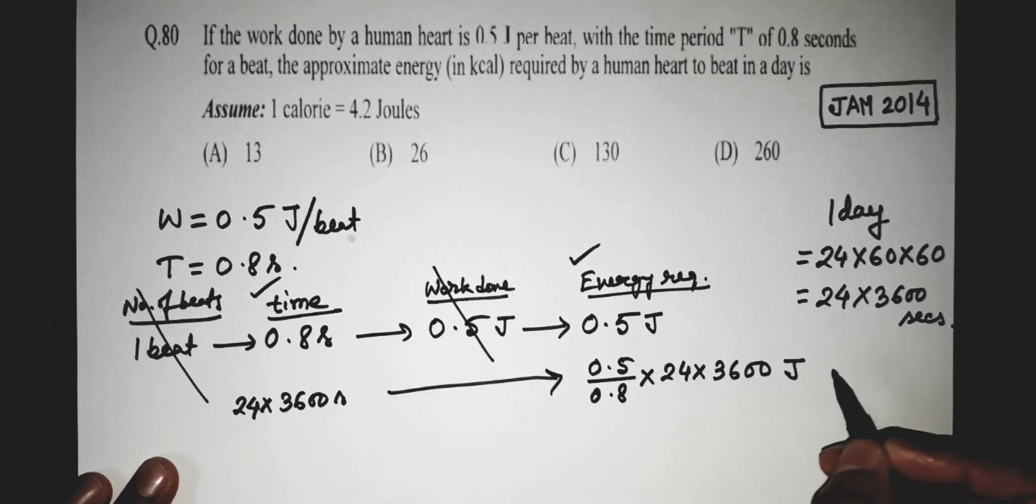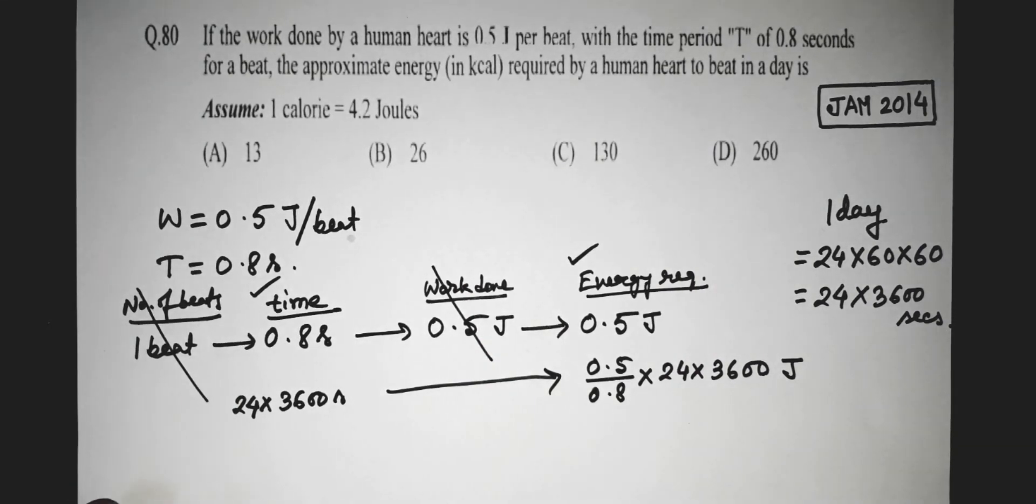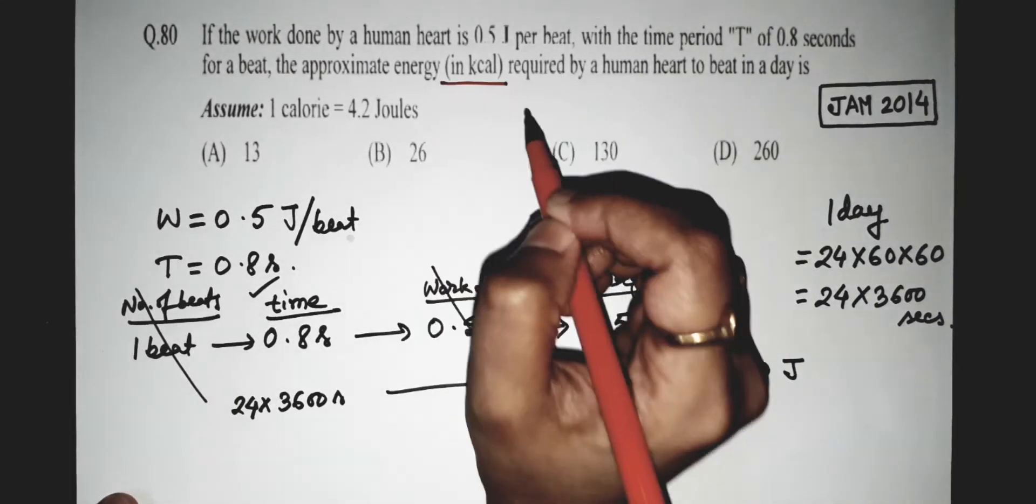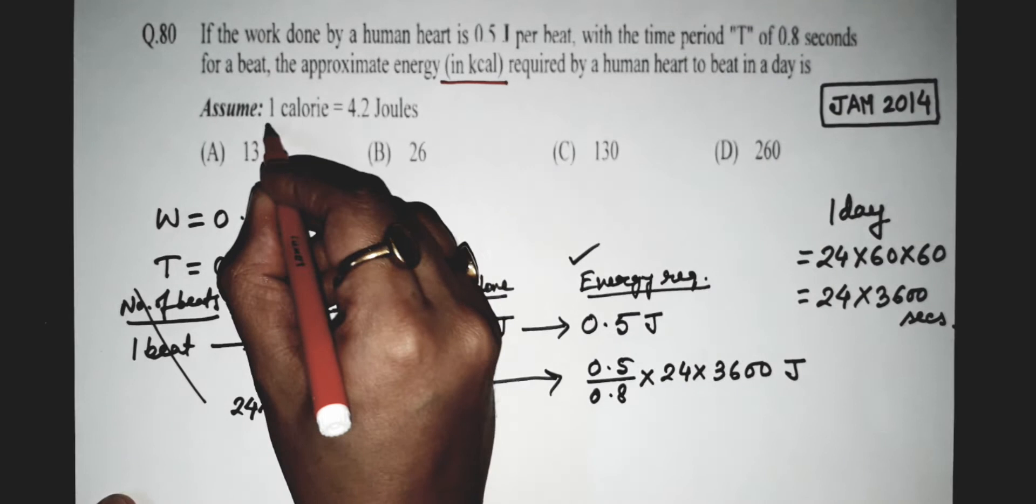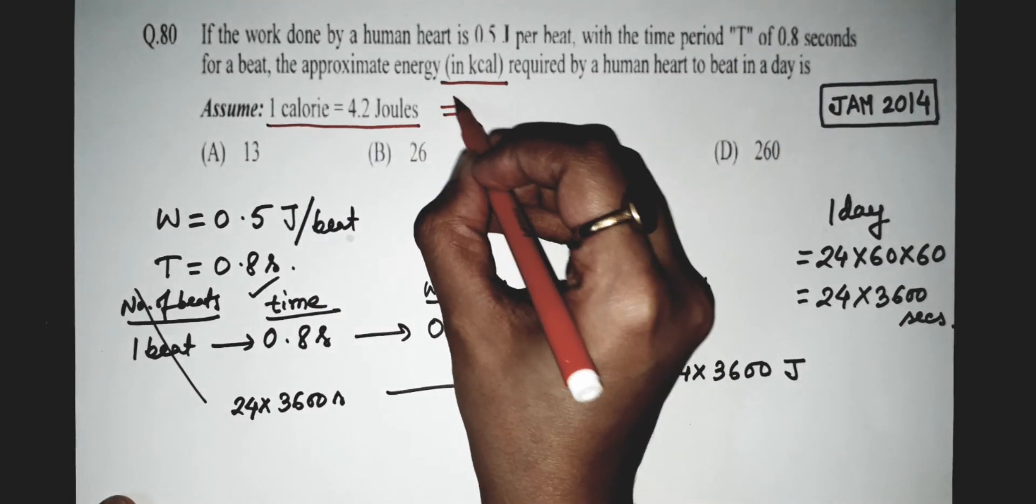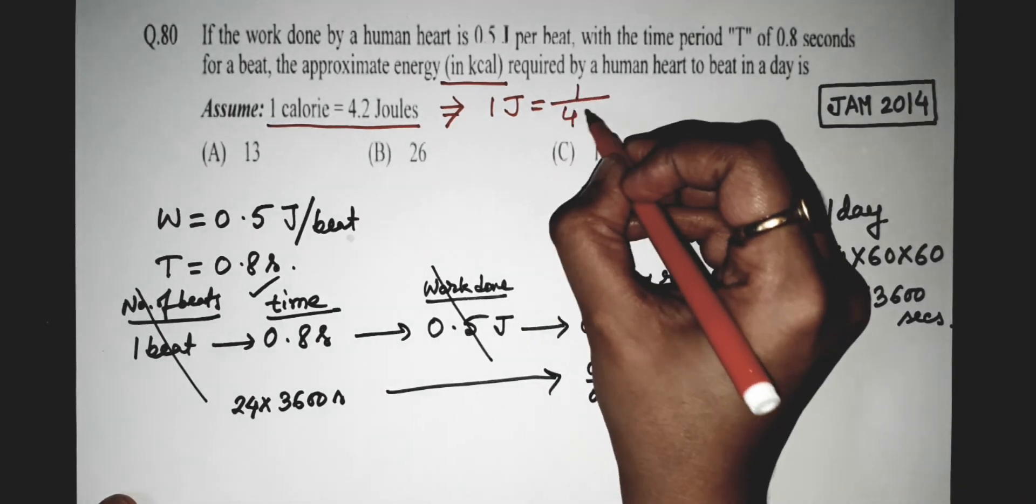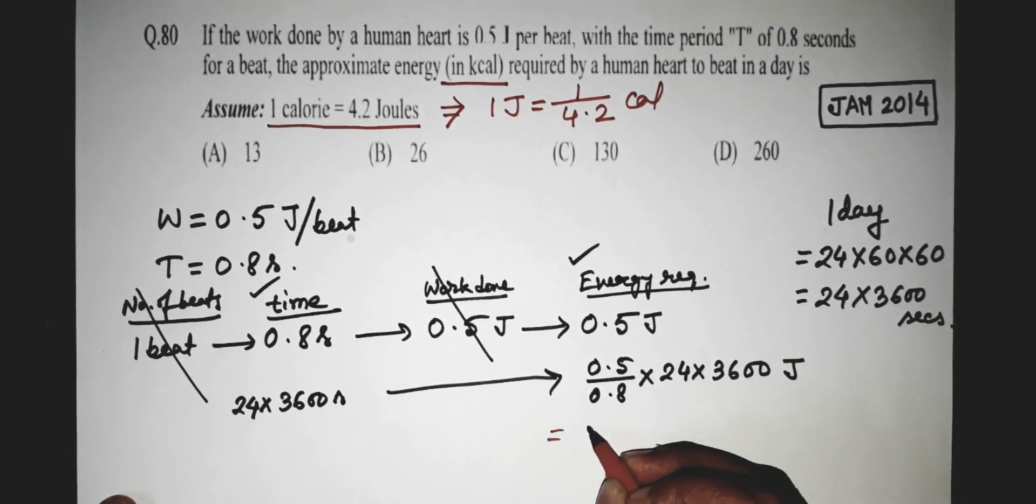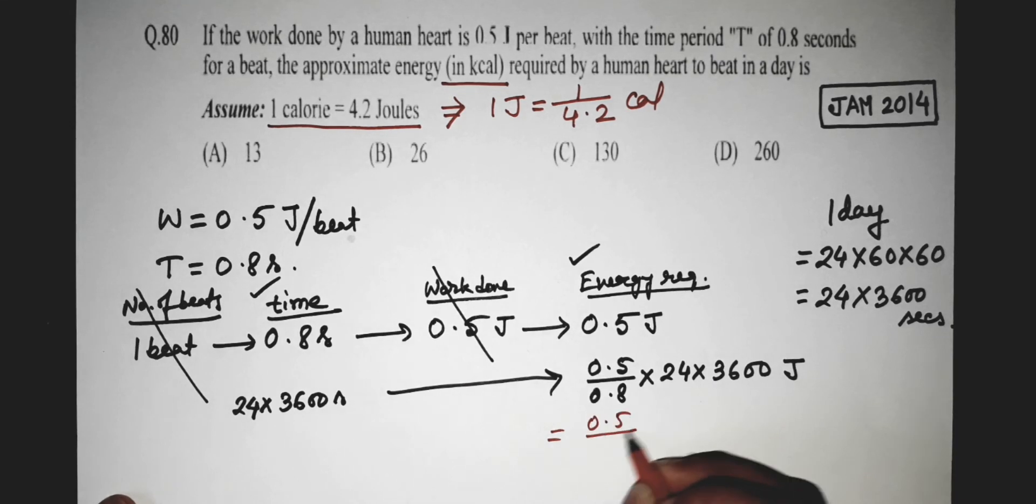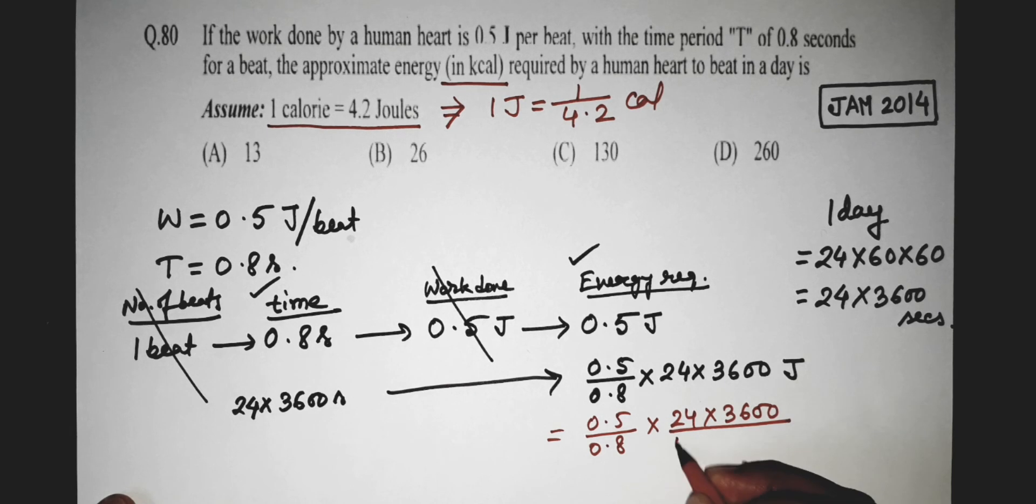Now here there is a problem. That is, the question asks to calculate the energy in kilocalorie. So to convert joule to kilocalorie, we have to use this formula, which gives us one joule equals 1 by 4.2 calorie. So in the next line, we have to divide this by 4.2 and we will get the answer in calorie.